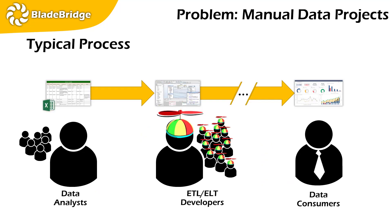Now let's talk about the typical process you might go through in a manual data integration project. The first step happens on the left with the data analysts. What typically occurs is that you have the data analysts working on an Excel spreadsheet together in a design time event, mapping source to target objects. You literally have all of the source data objects and you need to map those to a target database schema, defining along the way the changes that have to occur in the data.